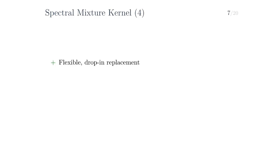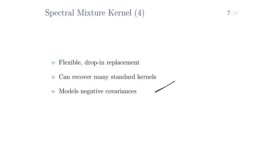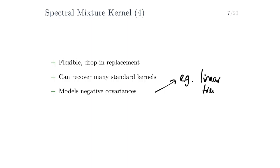The spectral mixture kernel is a flexible drop-in replacement for standard kernels that retains simple and closed-form inference. It is able to recover many standard kernels with only a few components — roughly 10. It is also able to model negative covariances, which is very important in, say, linear trends. However, not all is good, because in advance it is unclear how many components you need. Additionally, the parameters of these components are very difficult to optimize. The resulting optimization problem is highly non-convex and has many local minima, and the hyperparameters are super sensitive to initialization.